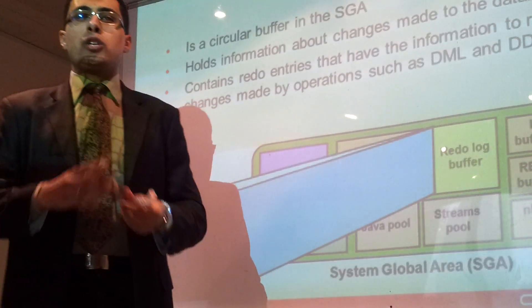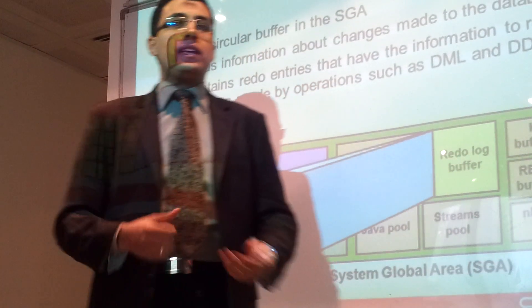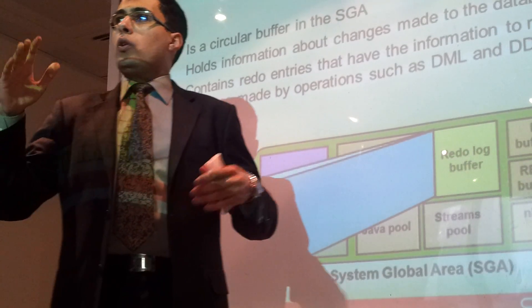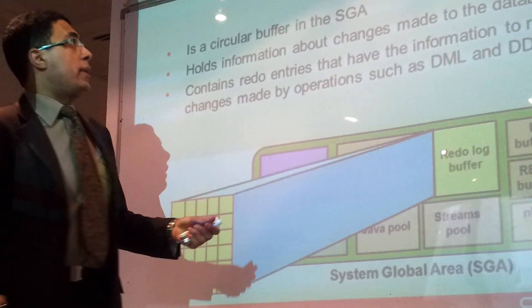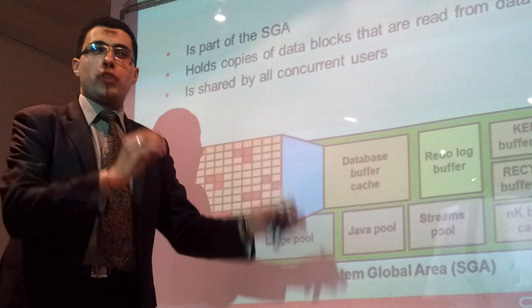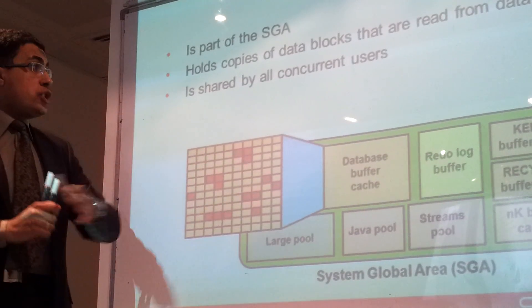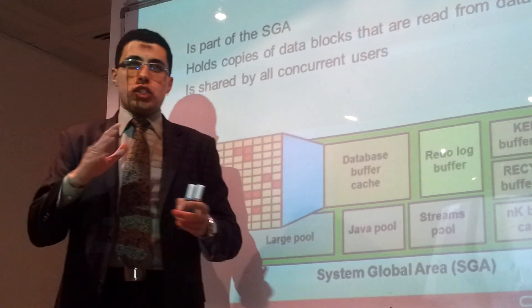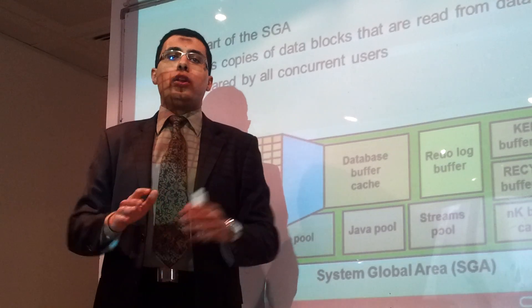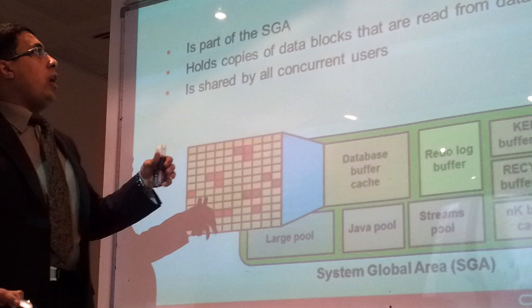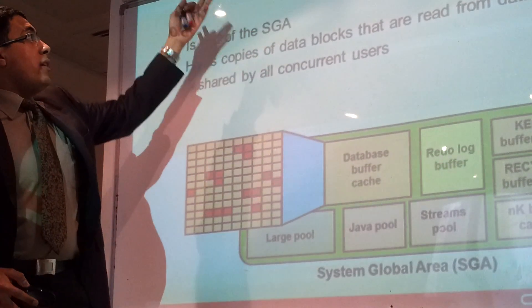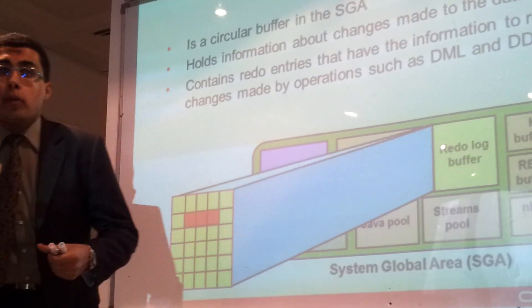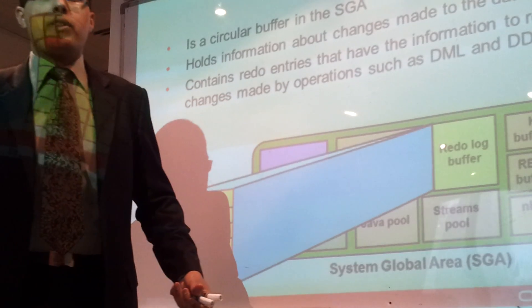Why exactly do we need to keep track of this information? Assume you are working during the day and all modifications happened in the database buffer cache, but you did not get the opportunity to flush all these changes back to the database data files. Disk I/O in the middle of the day causes a lot of disk contention. So the priority is given to the redo log buffer cache — it must flush all its contents before the database buffer cache does.